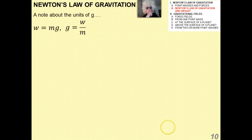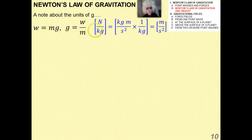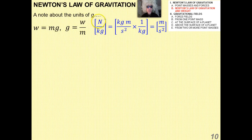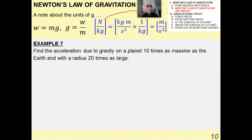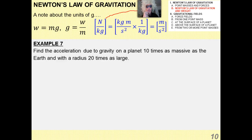About the units of G: g is weight over mass. We'll start expressing g not in meters per second squared but in Newtons per kilogram — and notice that a Newton per kilogram is a meter per second squared. For Example 7, find the acceleration due to gravity on a planet 10 times as massive as the Earth with a radius 20 times as large. Does your intuition say it'll be greater or less than Earth's g?